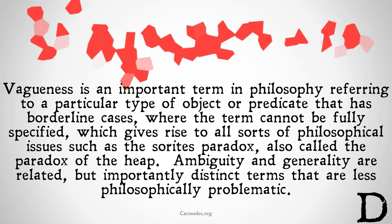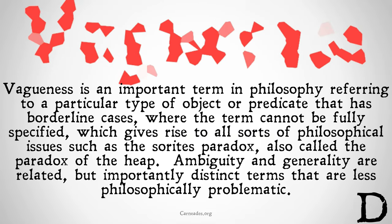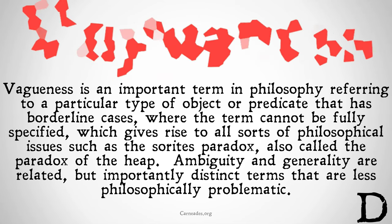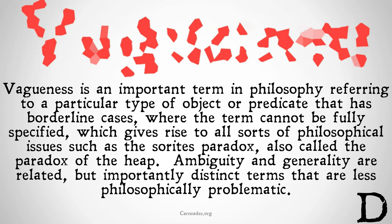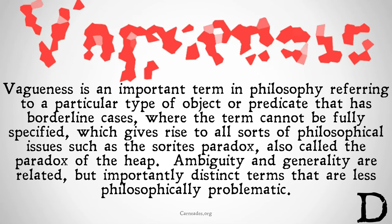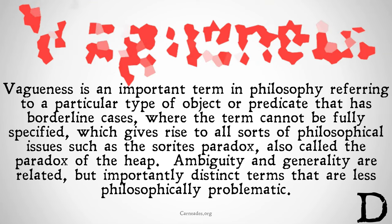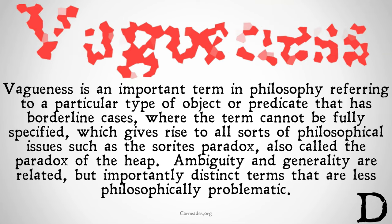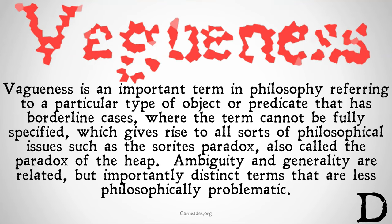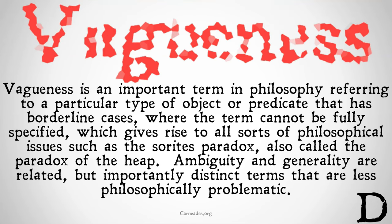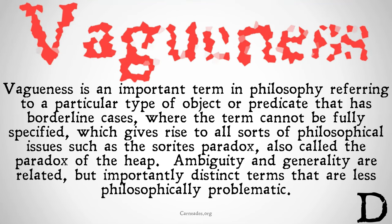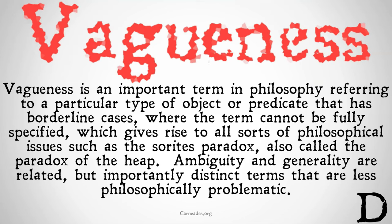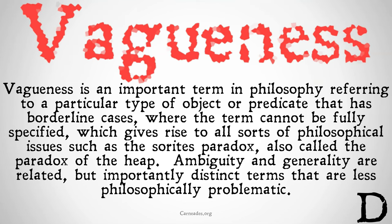Vagueness is an important term in philosophy, referring to a particular type of object or predicate that has borderline cases, where the term cannot be fully specified no matter how much you investigate into it. This gives rise to all sorts of philosophical issues, such as the Sorites Paradox, also called the Paradox of the Heap. Check out our video on that.